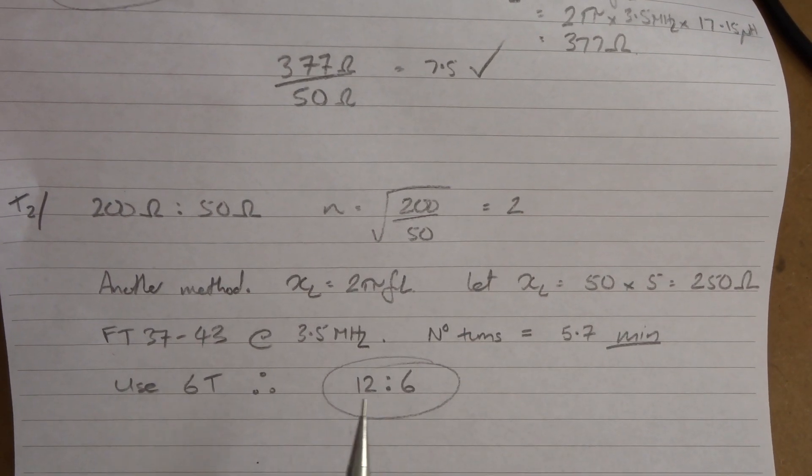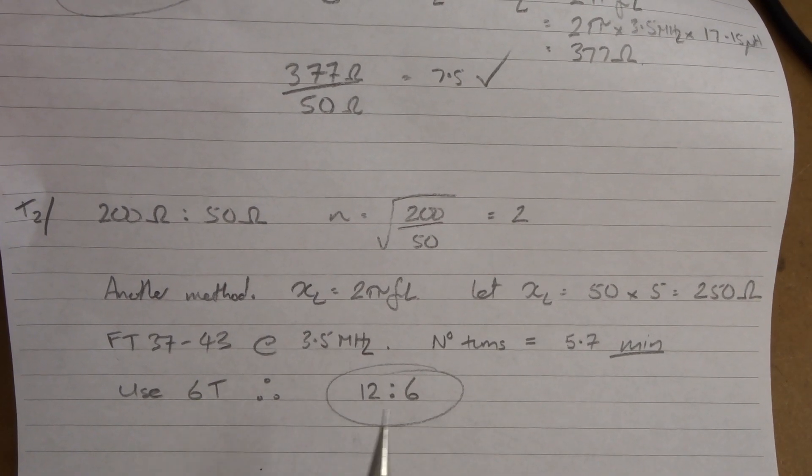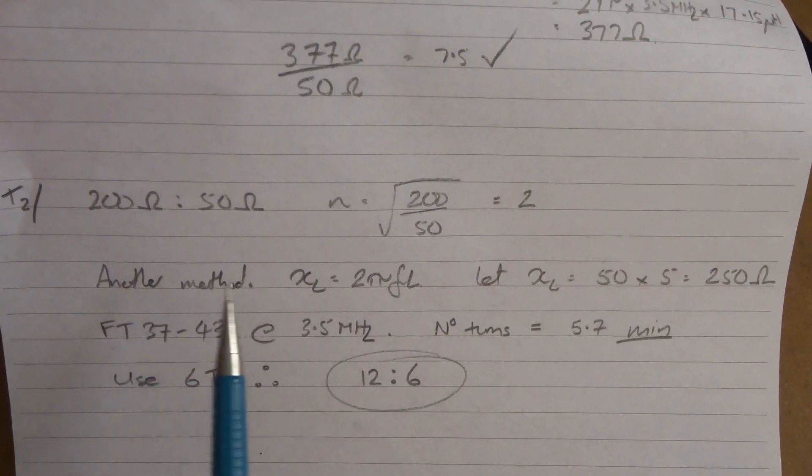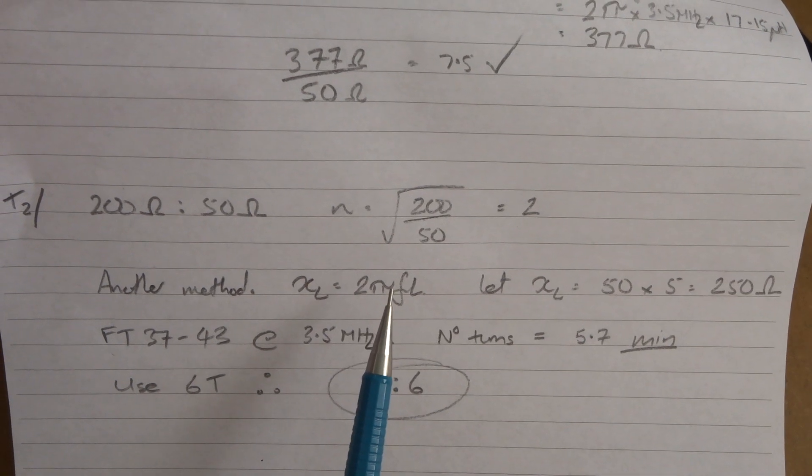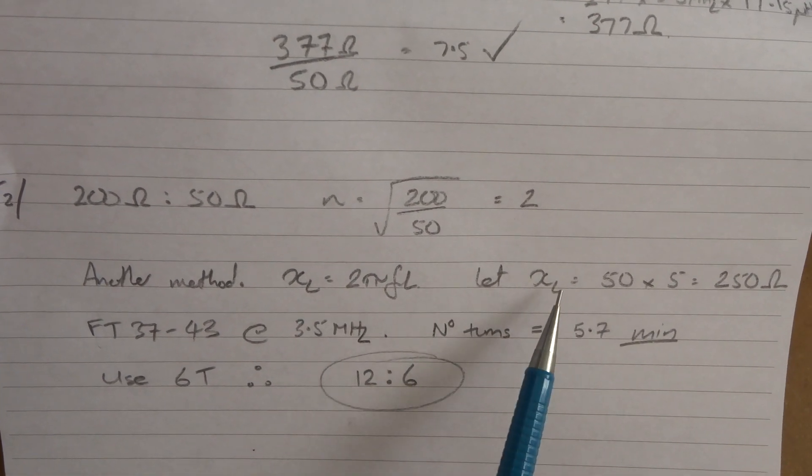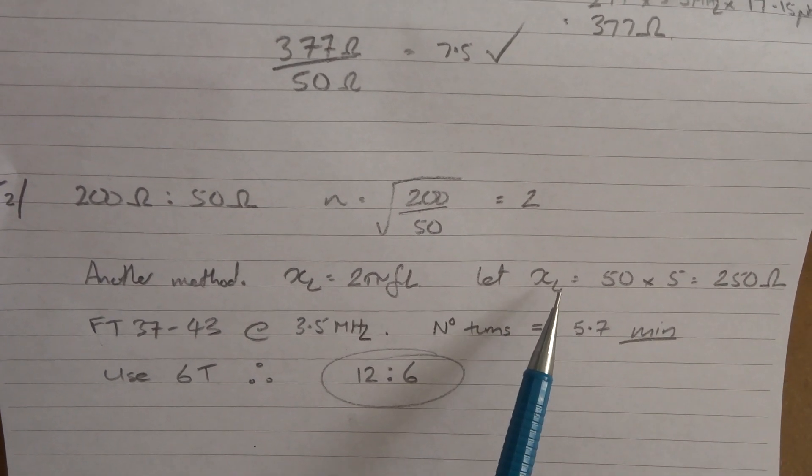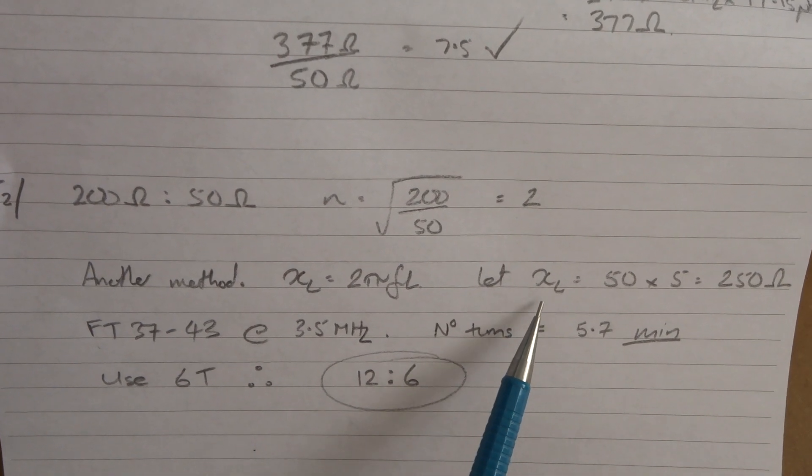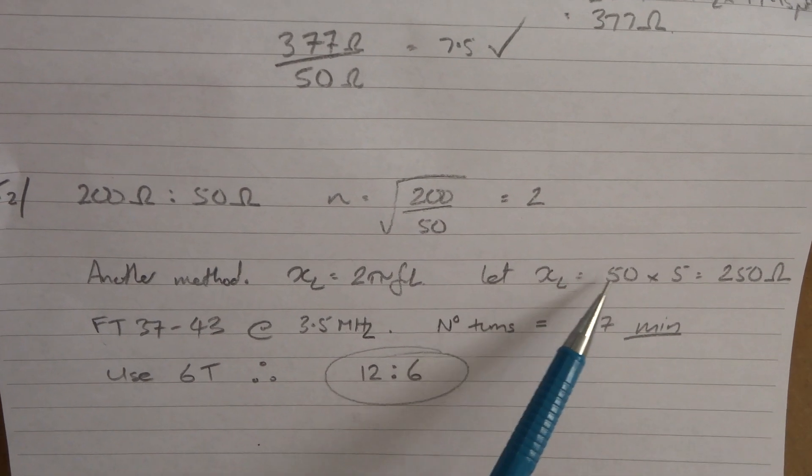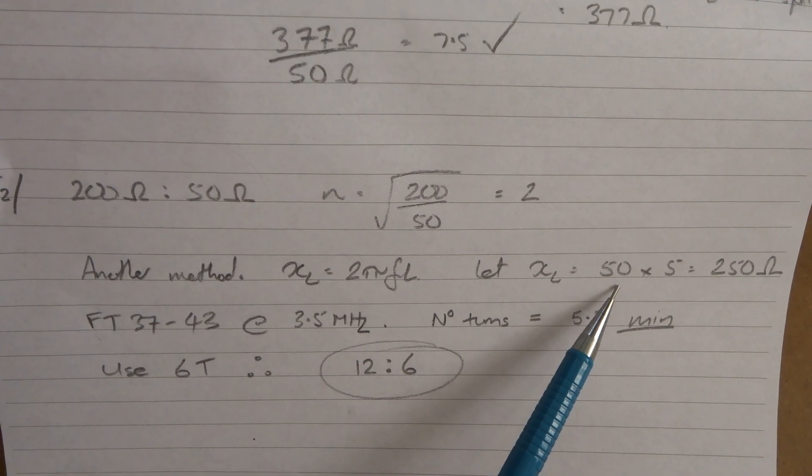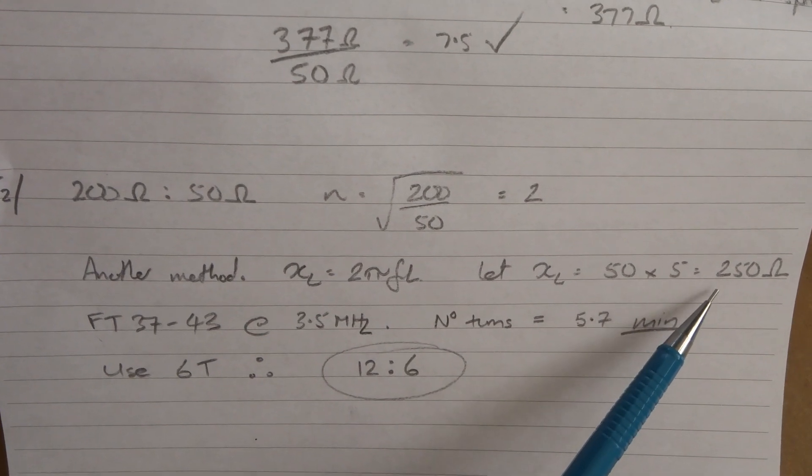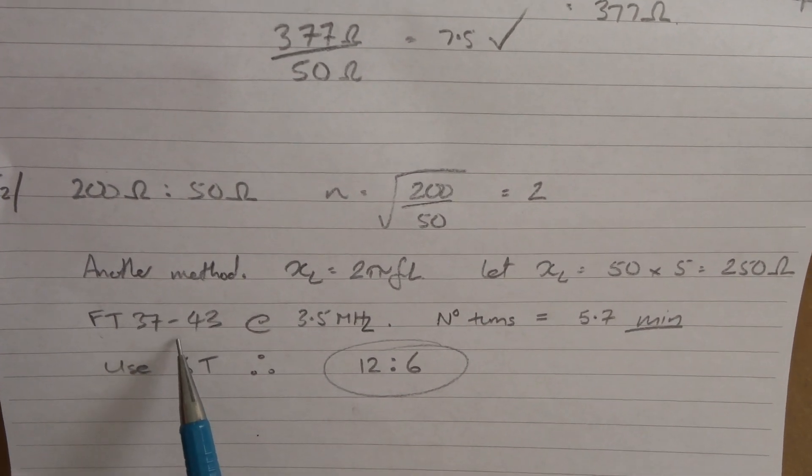I've got a rough guess that's going to be 12 to 6 because these are the values I've used in the past. So what I thought I'd do, just for something different, another method - we know that XL equals 2 pi FL. I'm going to use the online calculator to work out what the number of turns needs to be, given an inductive reactance and a frequency. I'm going to say that XL needs to be 50 ohms, the input to the mixer, times 5, so 4 to 5 times minimum, equals 250.